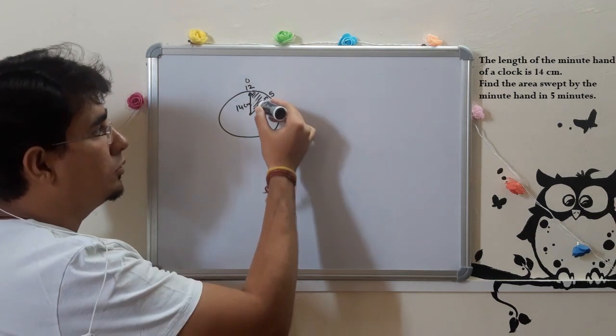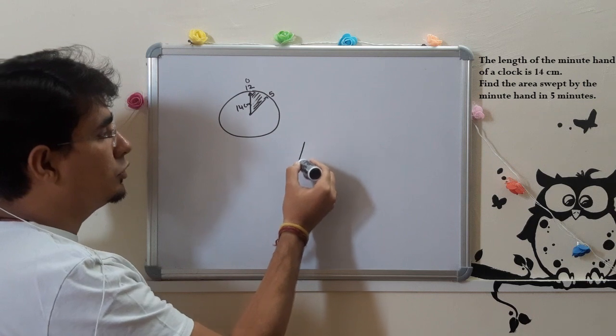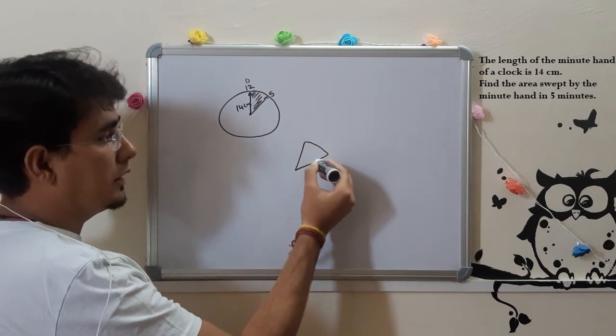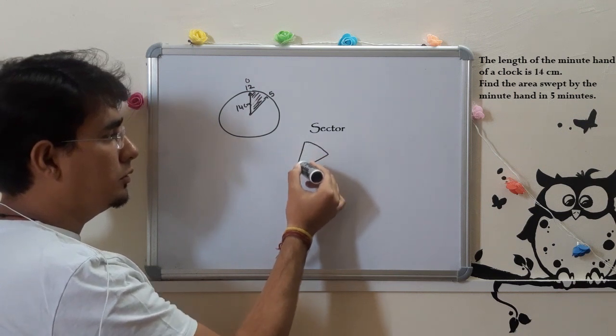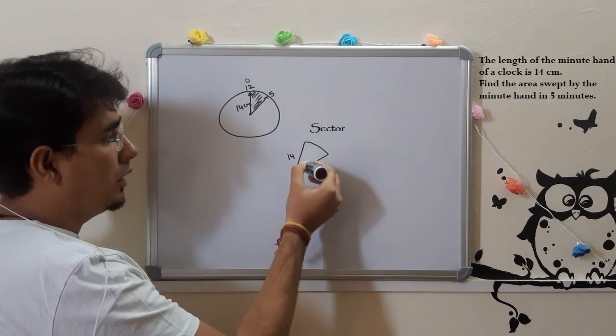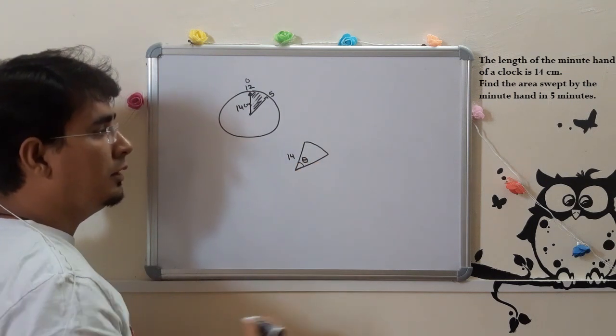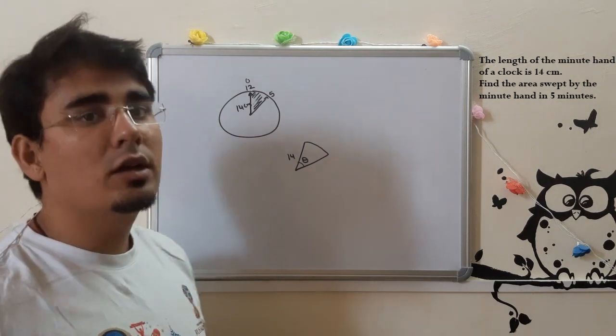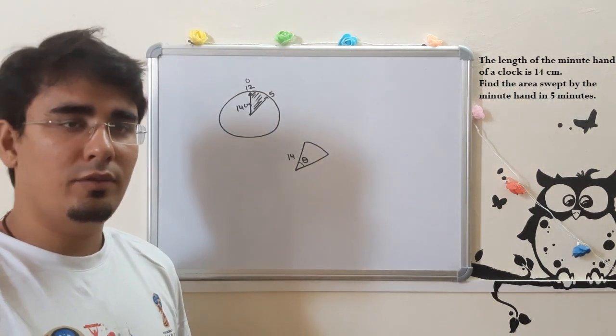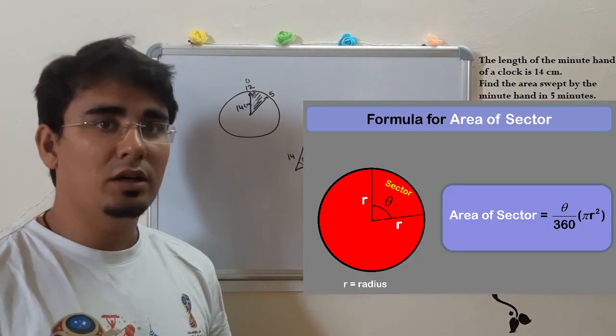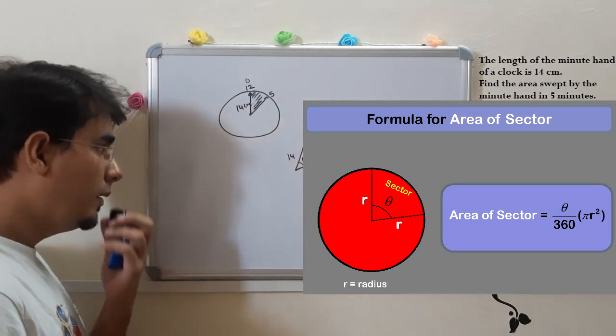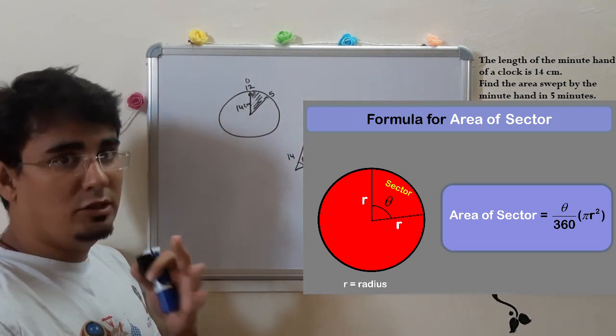So the shape is a sector and the radius is 14 cm. Our question is what is theta? If we have theta, then the question is very easy. We know the area of a sector, the formula is theta upon 360 times pi r squared. So the concept is very important that it is 5 minutes.